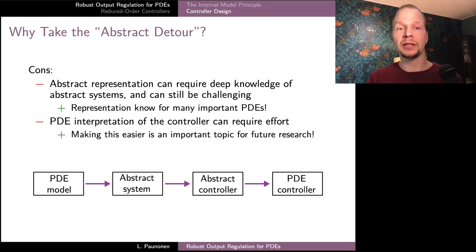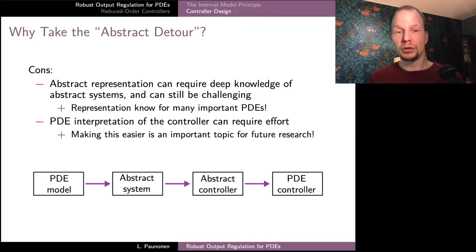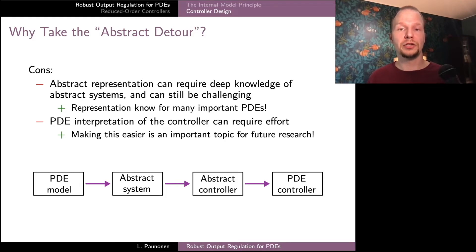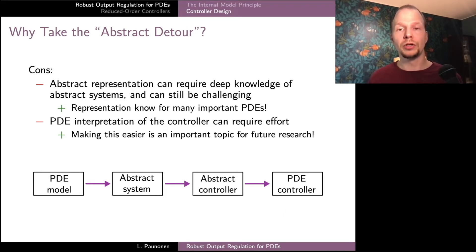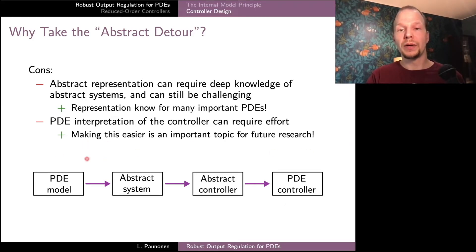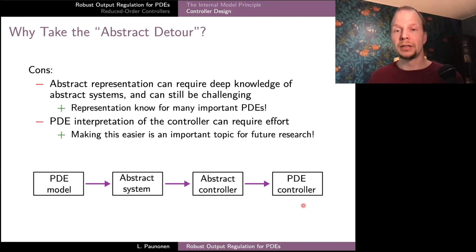The good news is that for large classes of important PDEs — like diffusion equations, wave equations, and beam equations with boundary control and distributed control — this abstract representation may already be known from the literature, helping with that first step. Similarly, in the last step, converting the abstract controller into a PDE controller can require effort and knowledge of abstract systems design, and this part hasn't been studied as much in the literature, though there is a lot to be done in making this step easier.